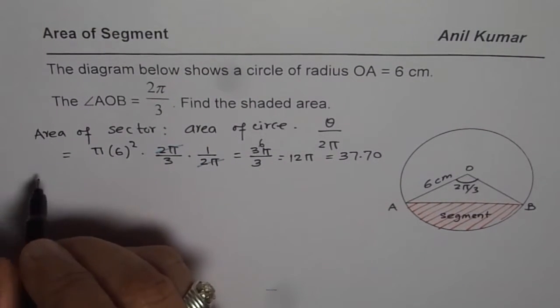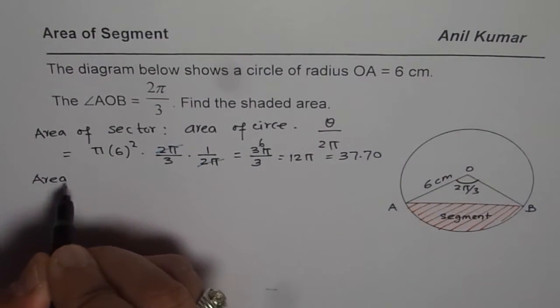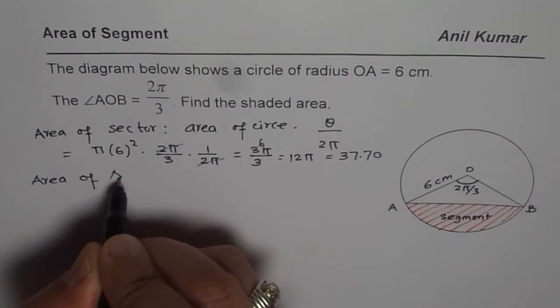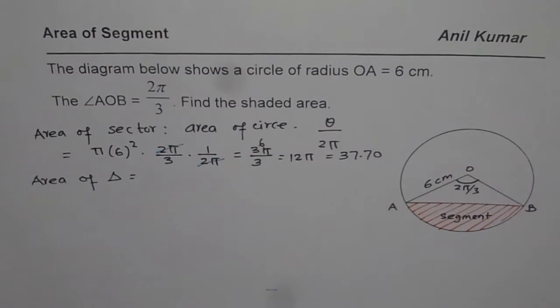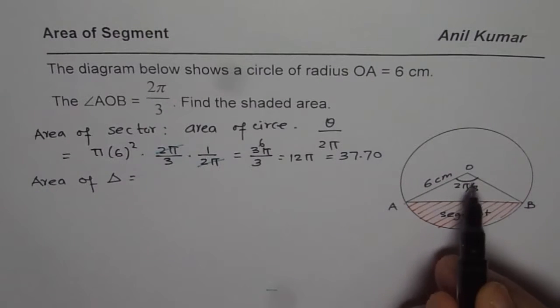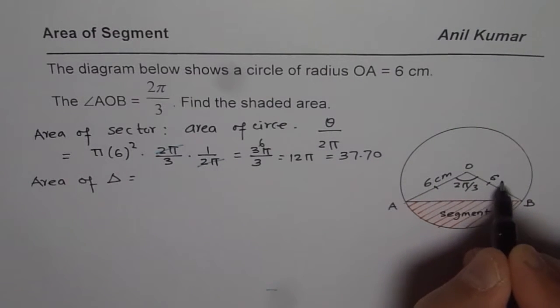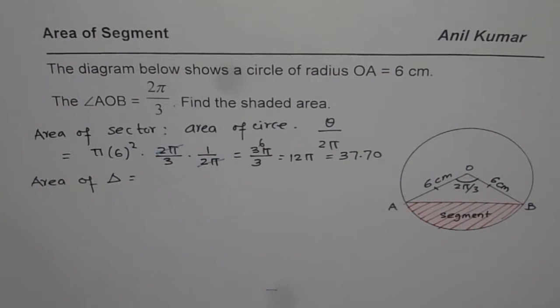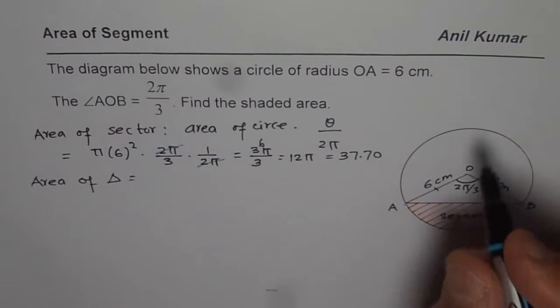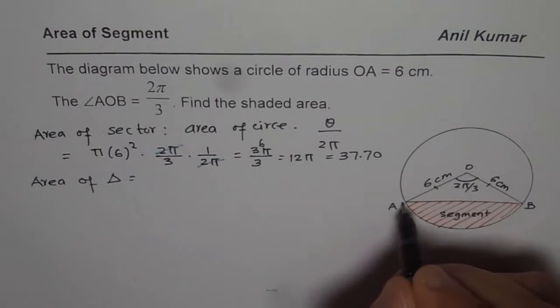Now let us find area of triangle. Now area of triangle is kind of tricky here. For area of the triangle we need to know the base and the height. We know that this is 6 centimeters. Since we want to find base and the height we could use cosine law to find the base.